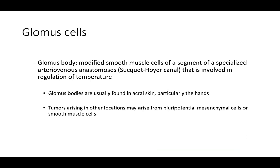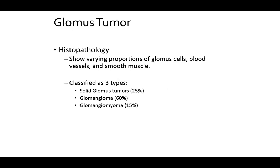The glomus body is a modified smooth muscle cell of a segment of specialized AV anastomoses derived from the Sucquet-Hoyer canal, which is involved in regulation of temperature. Glomus bodies are usually found in acral skin, particularly the hands. Tumors arising in other locations may arise from pluripotential mesenchymal cells or smooth muscle cells. On histopathology you'll see varying proportions of glomus cells, blood vessels, and smooth muscle.